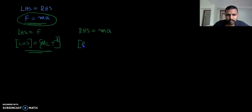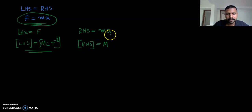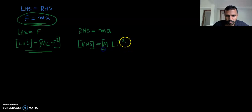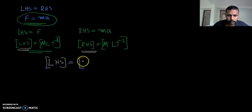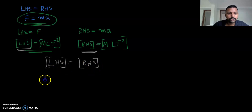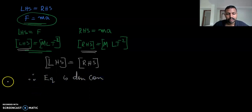RHS is MA. The dimensional formula of mass is M, and the dimensional formula of acceleration is LT raised to minus 2. Comparing the dimensional formula of LHS to RHS, we can clearly see they are equal. Therefore, we could say the equation is dimensionally correct.